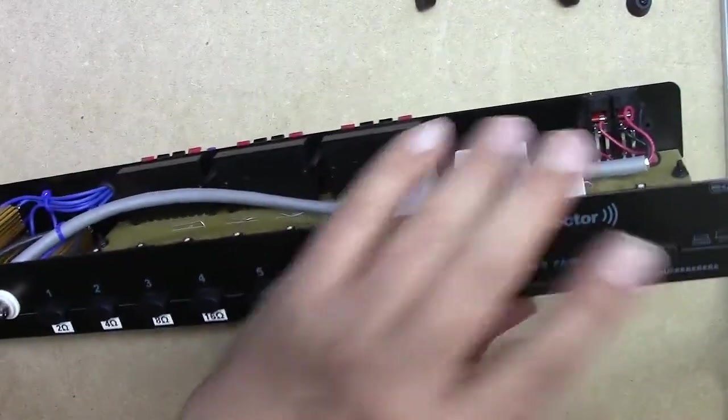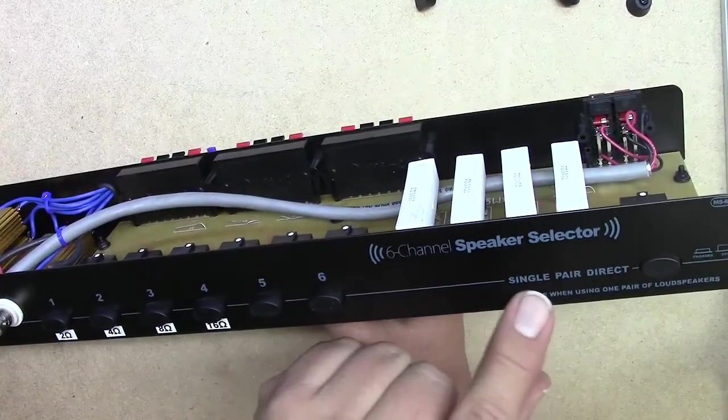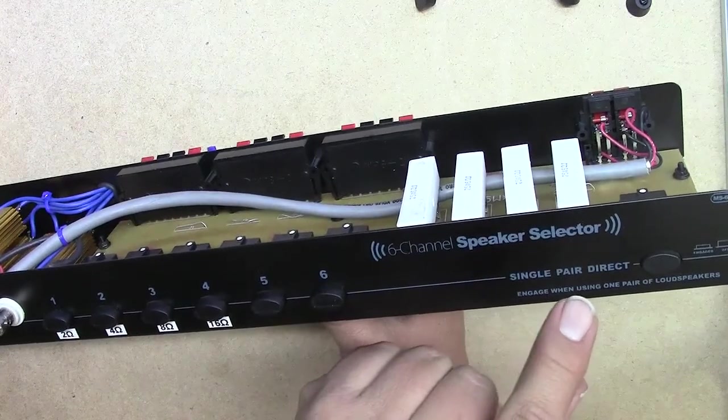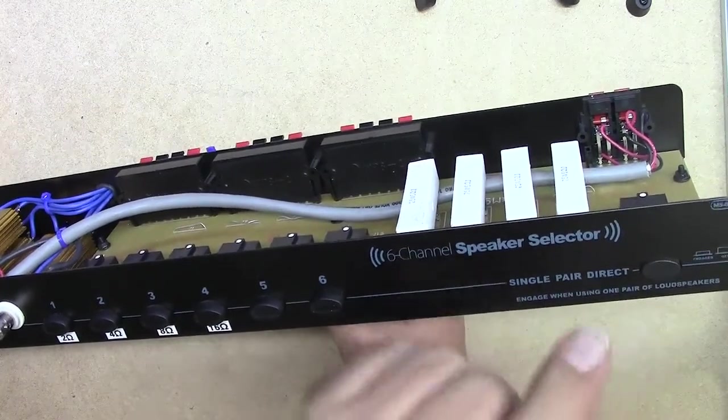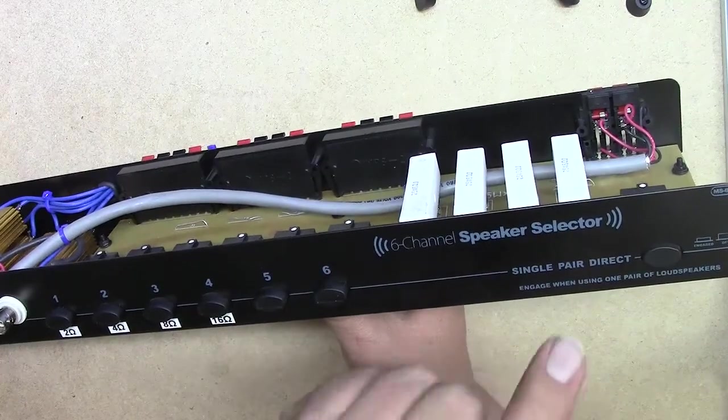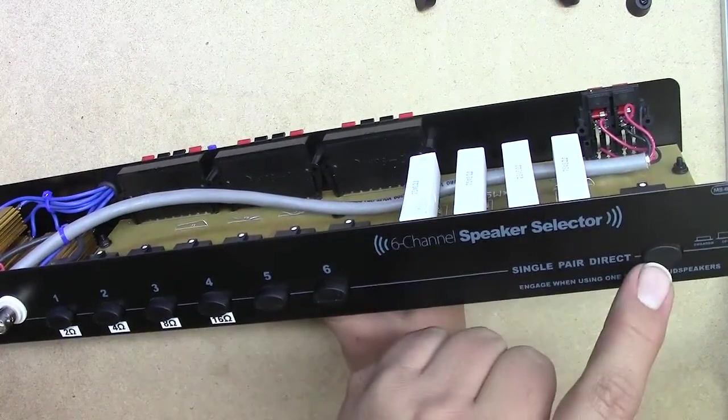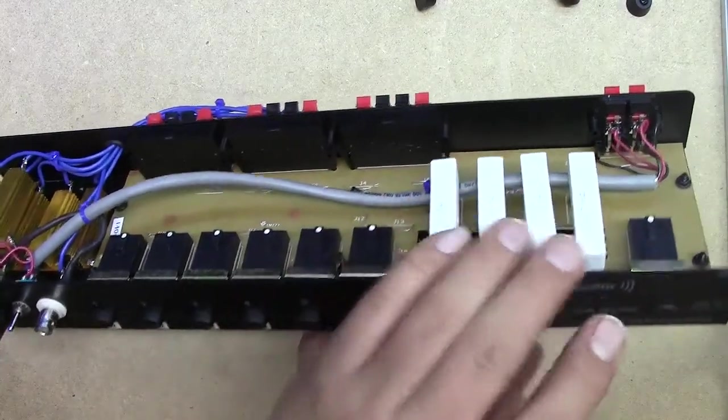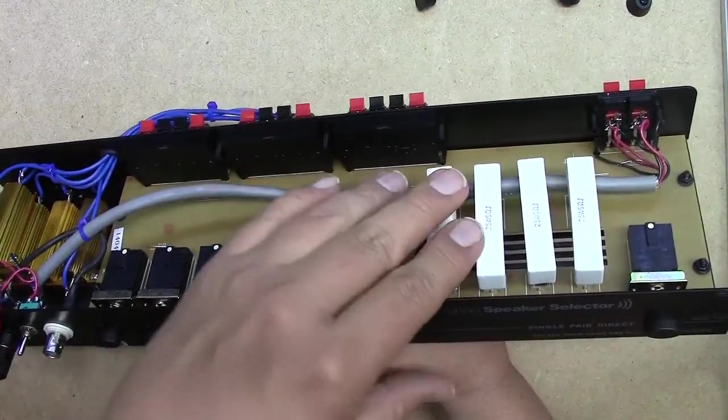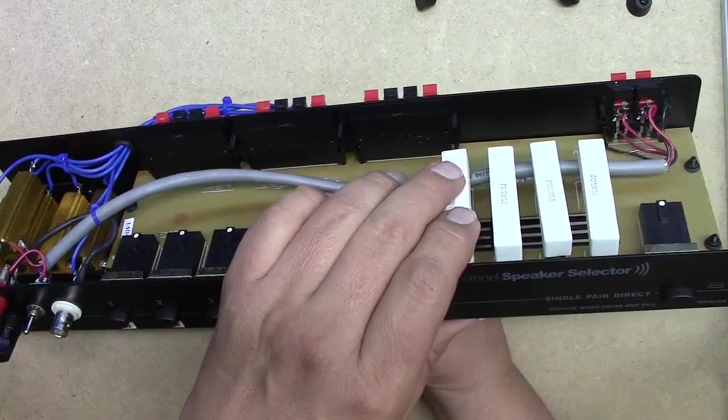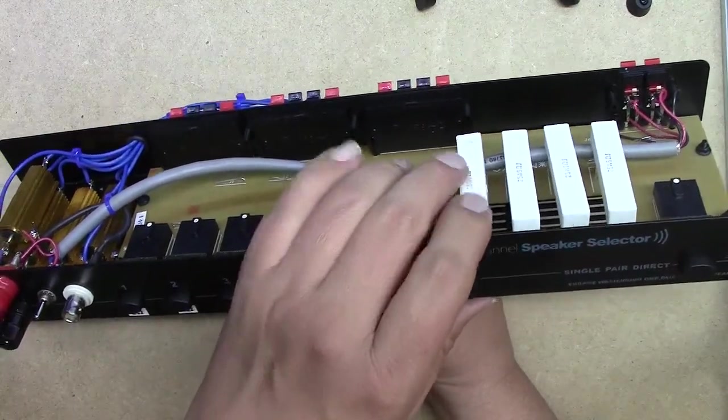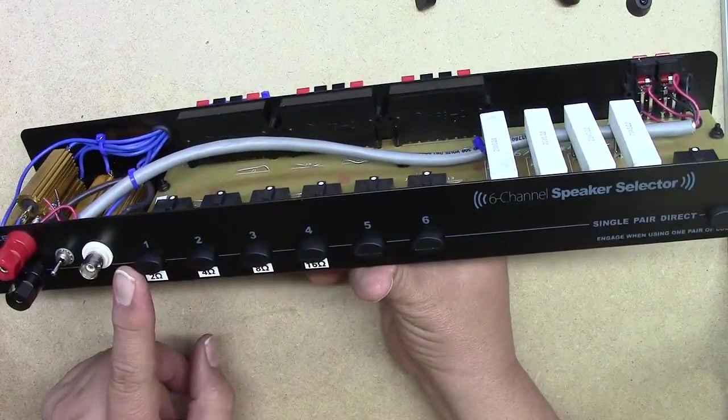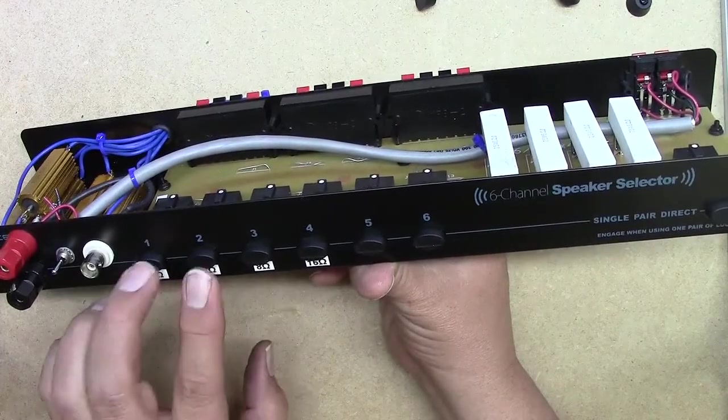This little guy over here, this thing called single pair direct, is kind of confusing. Engage when using one pair of loudspeakers. Basically if that button is pressed in then these extra resistors here are not put in the circuit. If you let this out then these resistors add a little bit of impedance to the load. If you have this many speakers running at the same time and they're all 8 ohms, this could be down to a 2-ohm load to an amplifier.